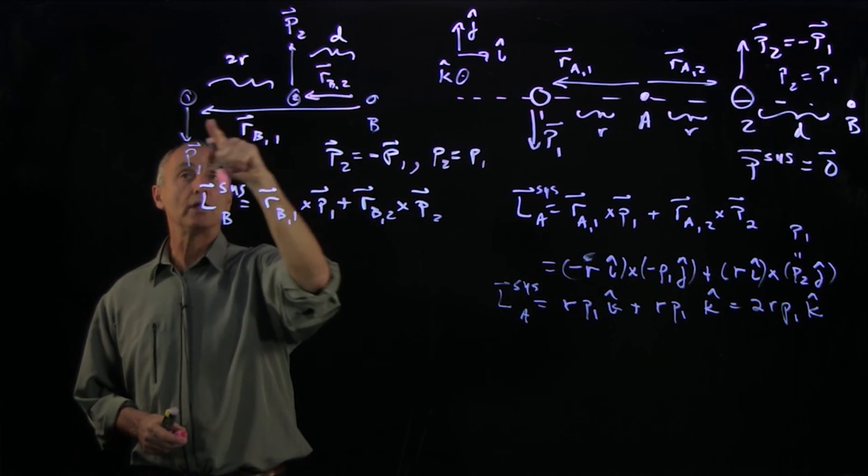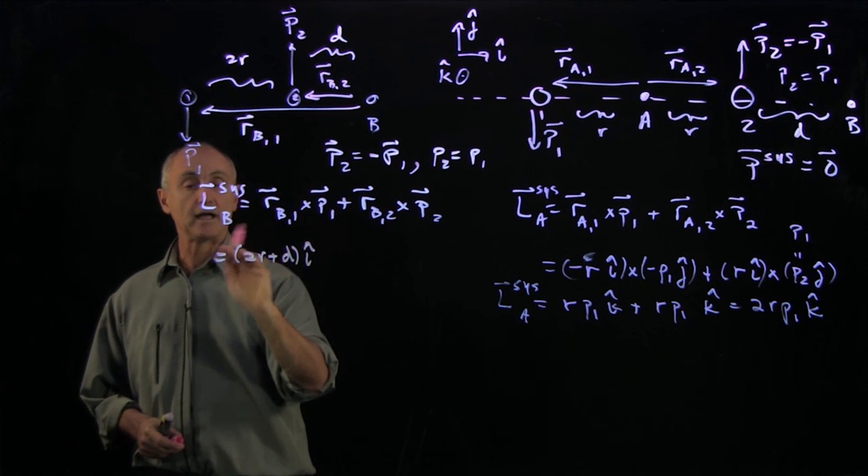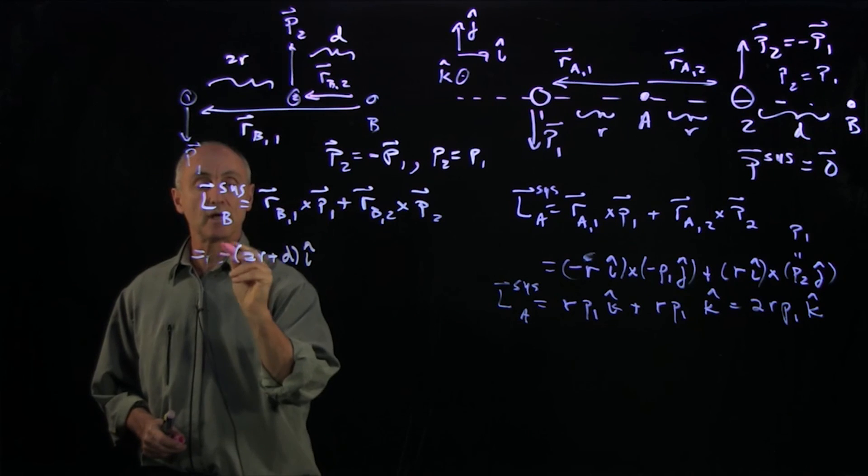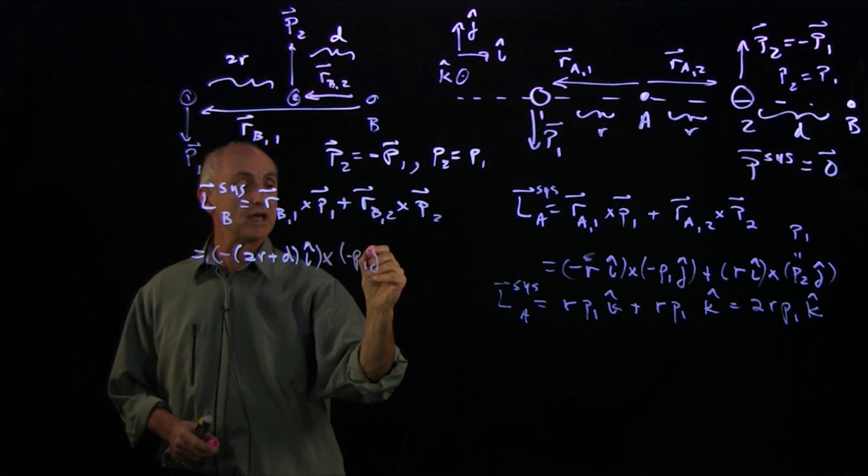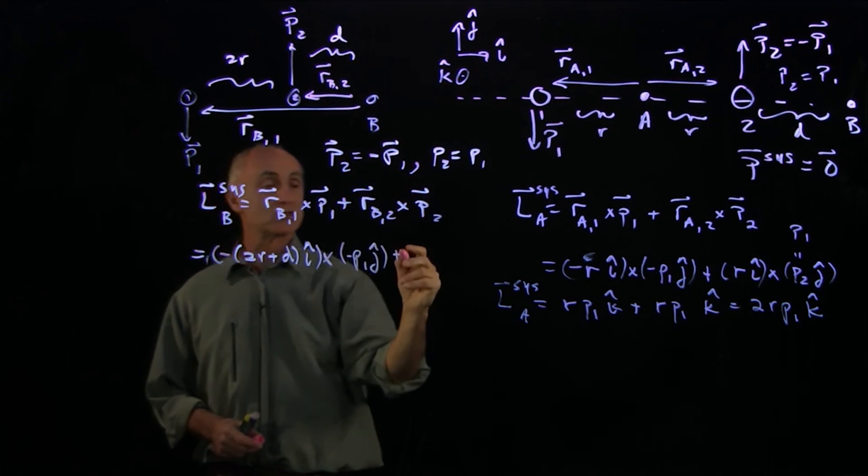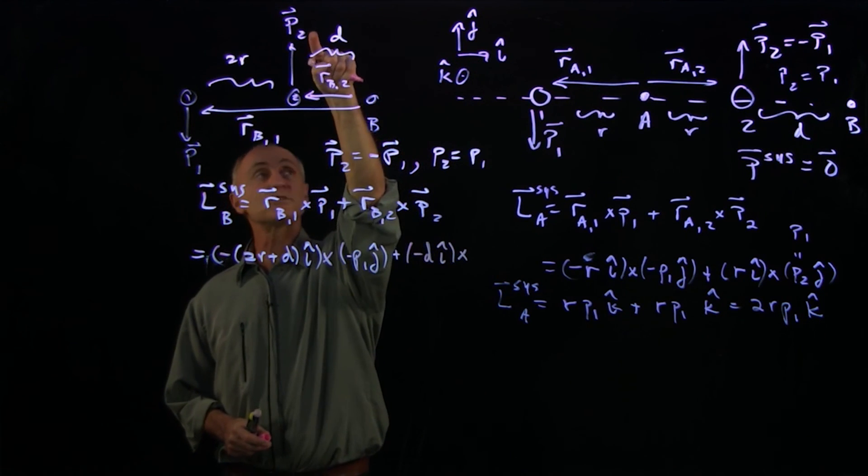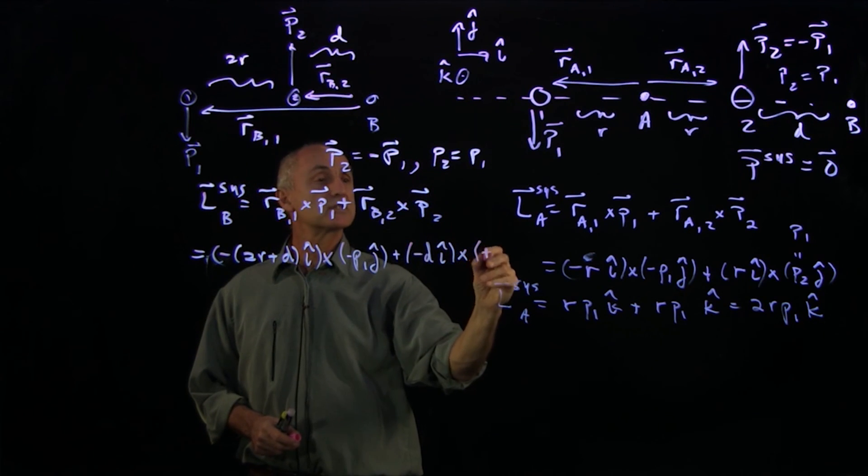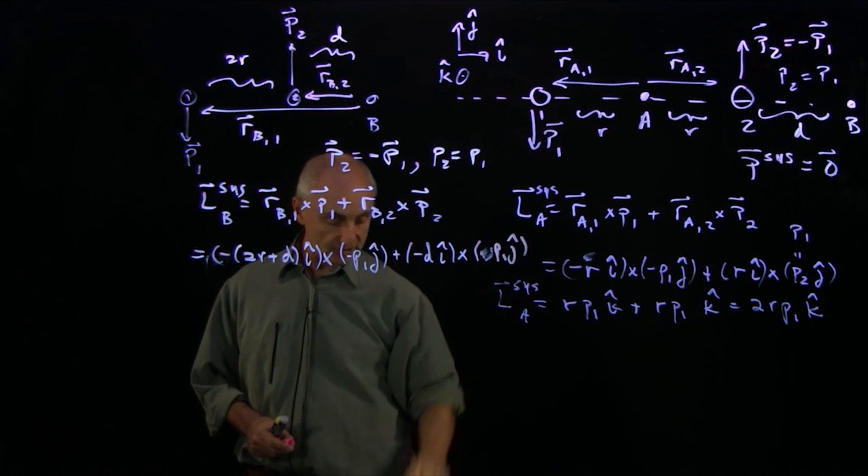So R_B1 is equal to 2R plus d i hat, and it's pointing in the minus i hat direction, cross P1 is in the minus j hat direction. R_B2 is also in the minus i hat direction, so that's minus d i hat. And P2 is in the plus j direction, so that is plus, the magnitudes are the same, P1 j hat.